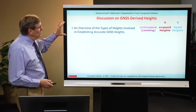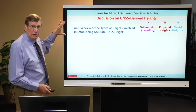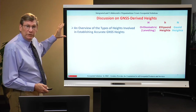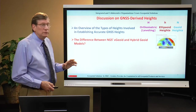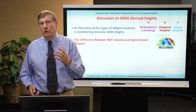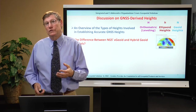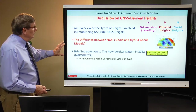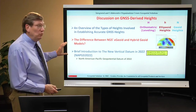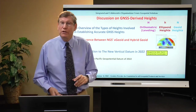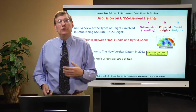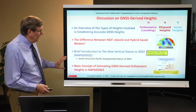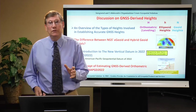What are we going to talk about? We'll get an overview of the types of heights involved in establishing accurate heights — orthometric heights, ellipsoid heights, and geoid heights. I'll spend time on the difference between NGS's scientific geoid models and their hybrid geoid models, which is a significant difference. I'll also give a brief introduction to NAPGD-2022, the North American-Pacific Geopotential Datum of 2022, which will replace NAVD-88, and cover basic concepts of estimating GPS-derived orthometric heights in NAPGD-2022.